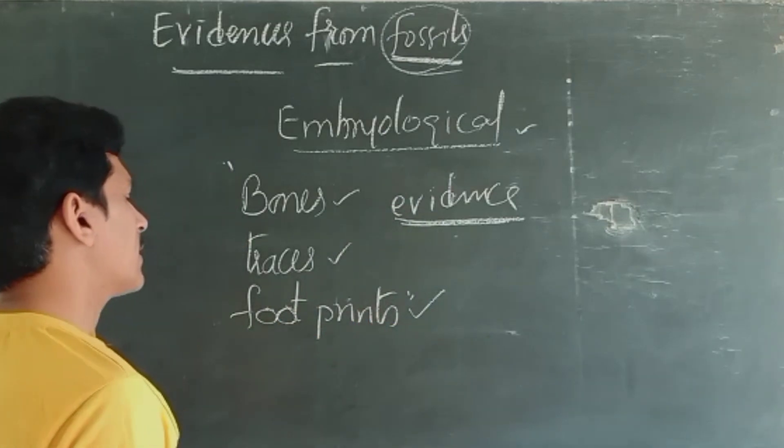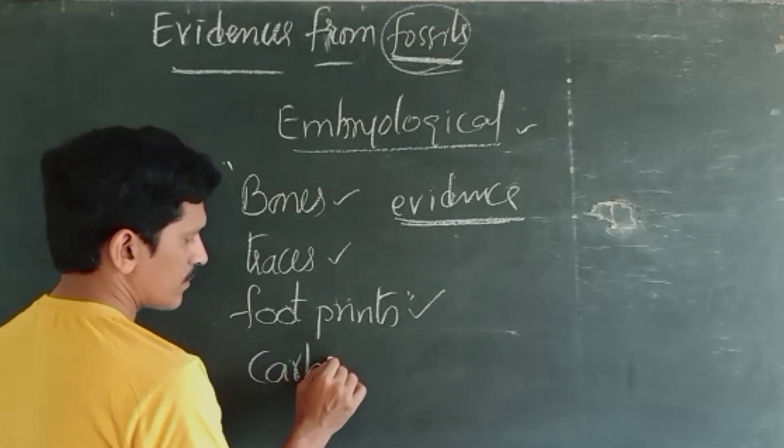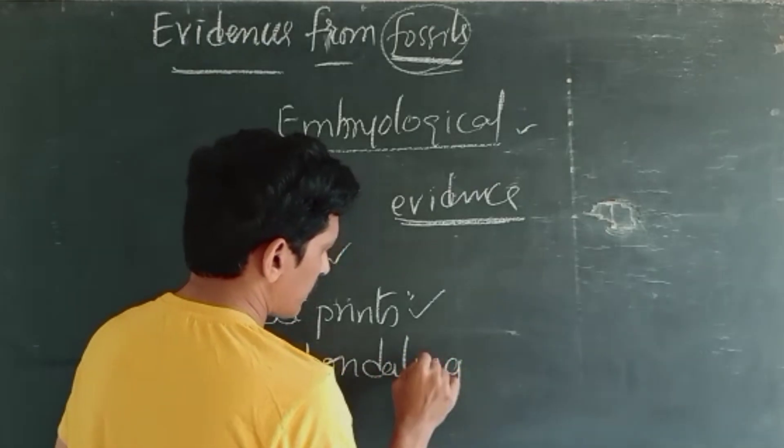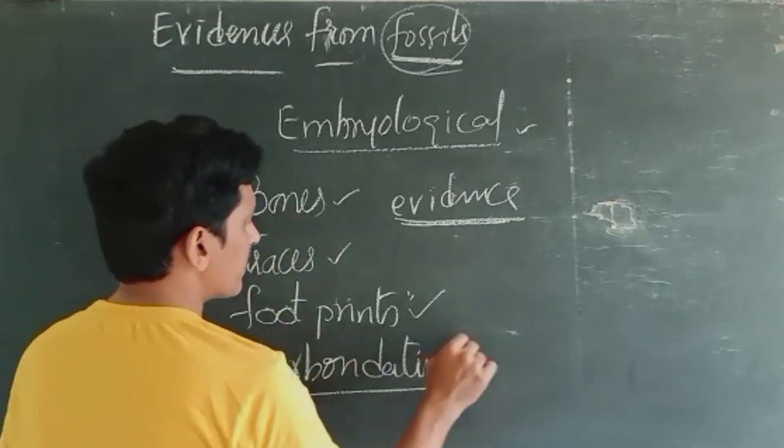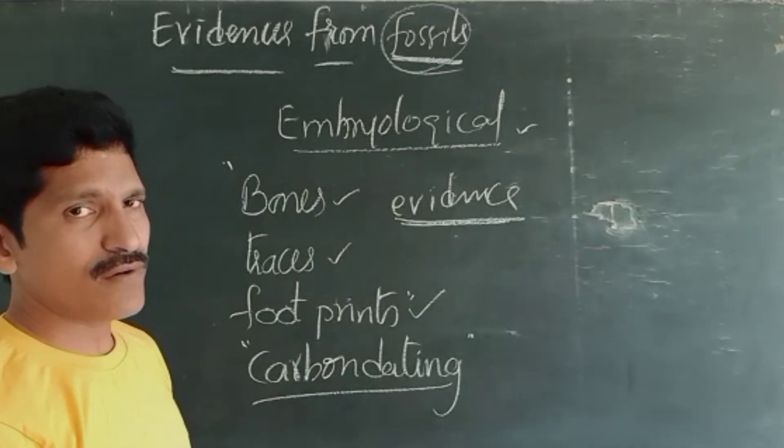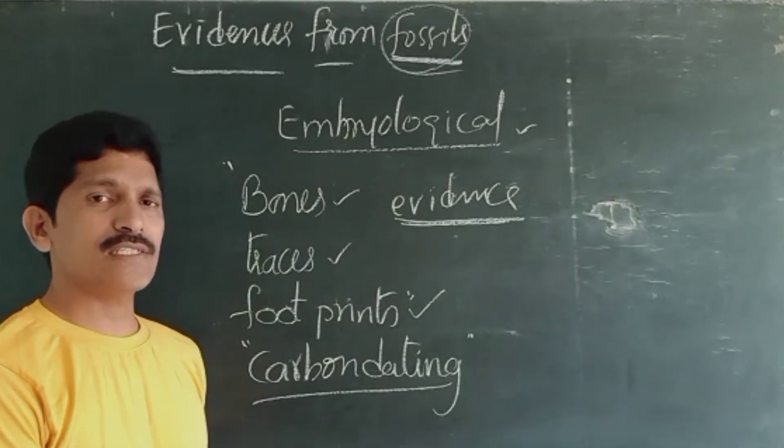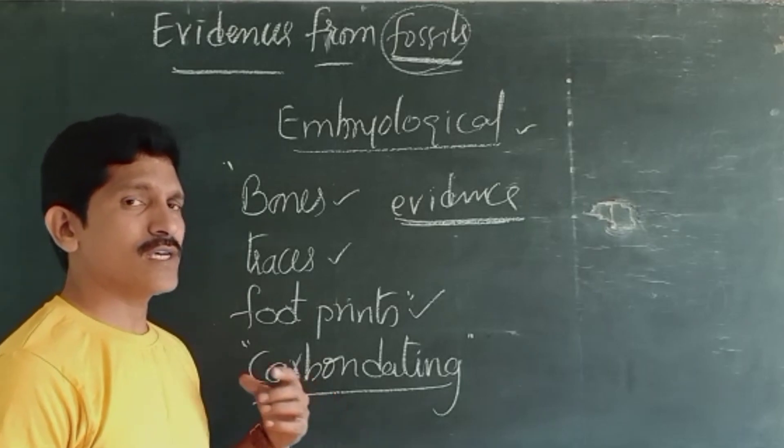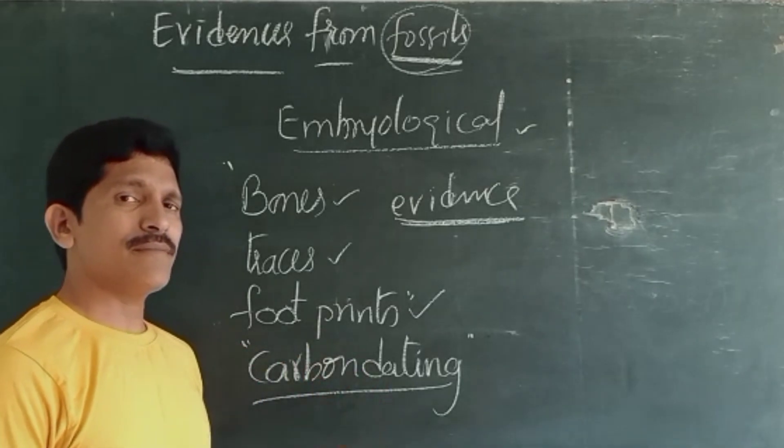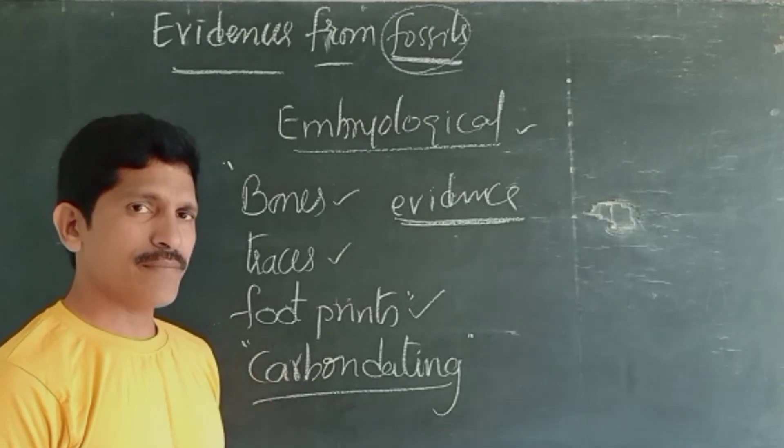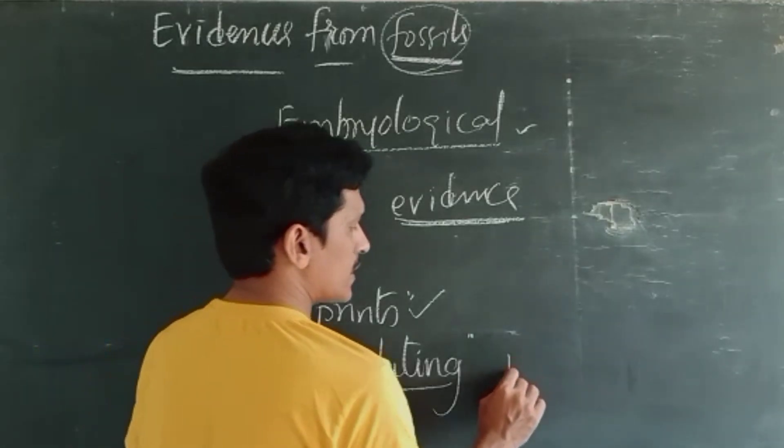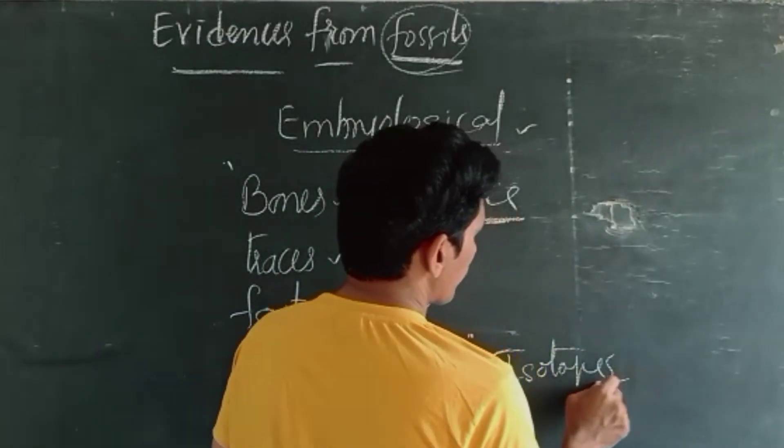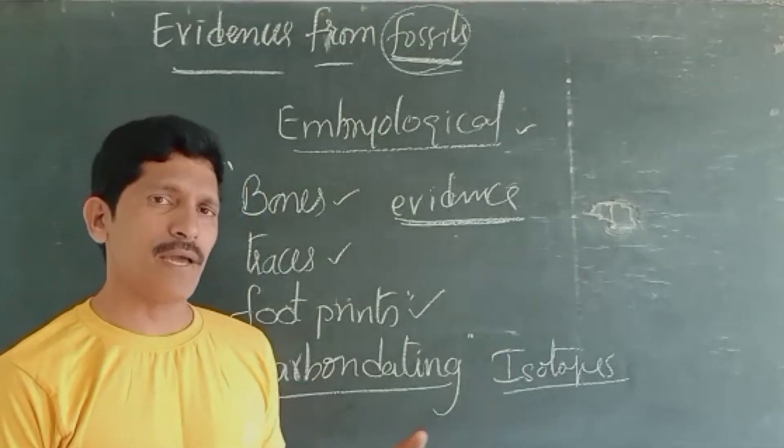And what is the process they are using to estimate the age of fossils? Nothing but carbon dating. In the sense, whatever fossils they are getting, the fossils have some kinds of minerals like carbon or uranium or phosphor, phosphate, like some uranium substance over there. Those are generally called isotopes.